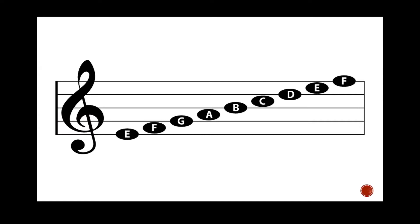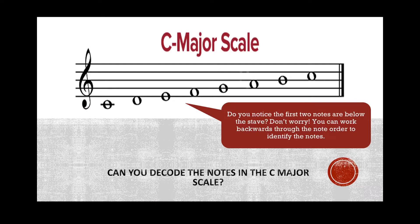When you're ready to move on, just come back to this video and press play. Here are the notes of the C major scale, and you might notice that the first two notes are below the stave. But don't worry — you can work backwards through the note order that we learned in the previous lesson to identify the notes. If you'd like to have a go at decoding the notes in the C major scale yourself, pause the video here, and when you're ready to check your answers, press play.